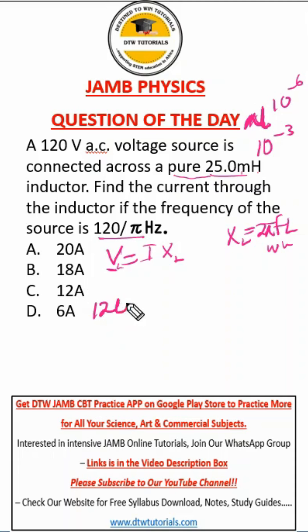From here we know our V is 120, so we put 120 equal to I. We're looking for I, which is the current. We're looking for the current through the inductor.